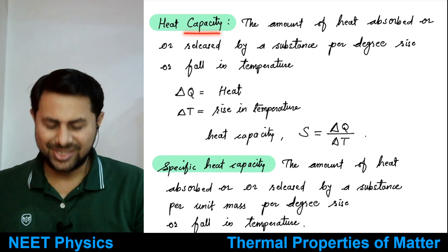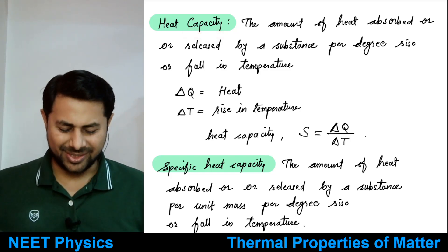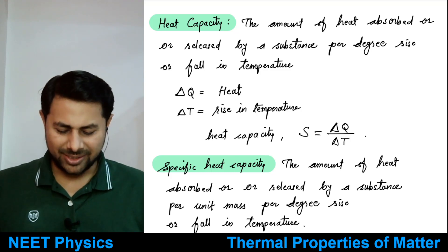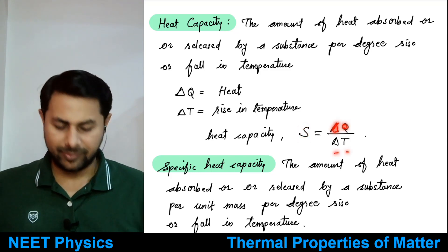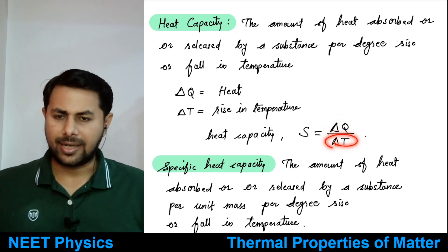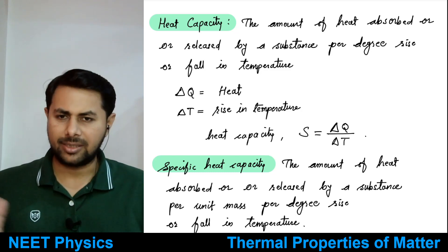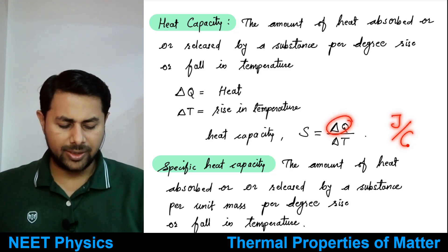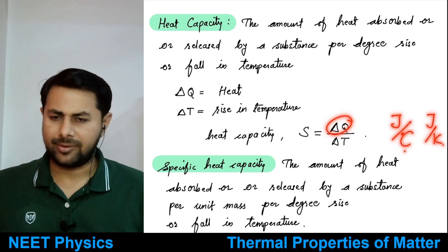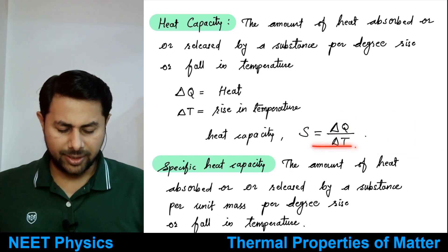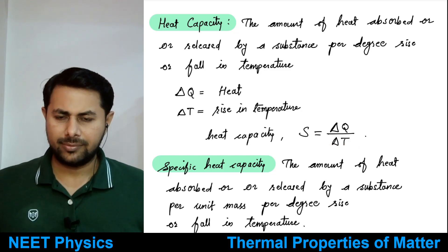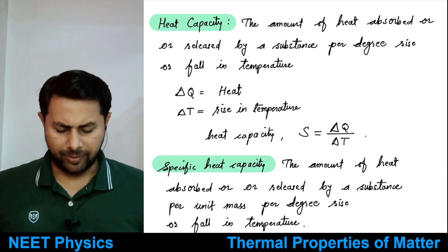There are different heat capacities: heat capacity, specific heat capacity, and molar heat capacity. Heat capacity is denoted by capital S, where S equals delta Q divided by delta T — amount of heat absorbed per degree Celsius rise in temperature. Its unit can be written as joules per degree Celsius or joules per Kelvin.